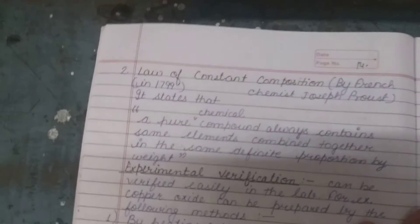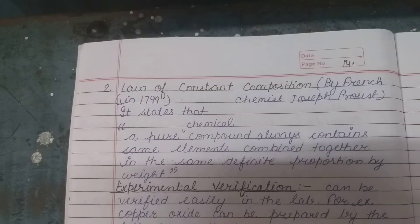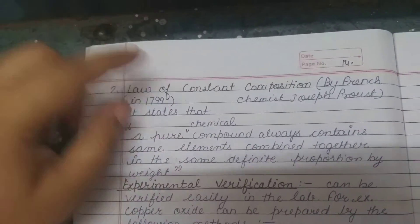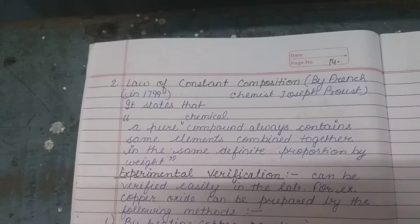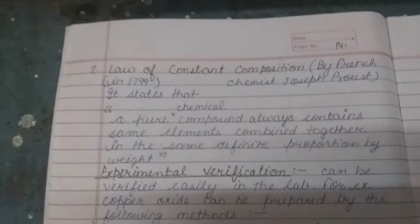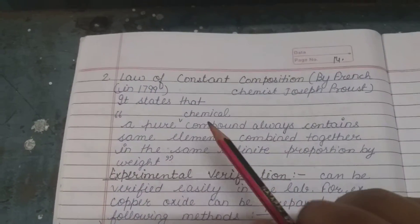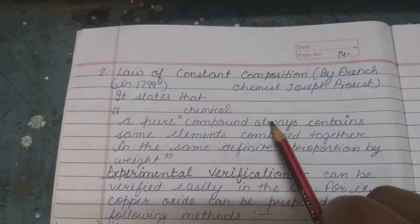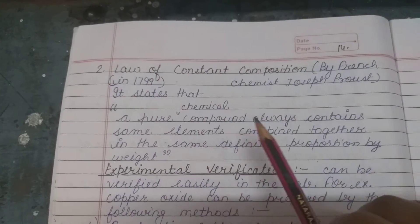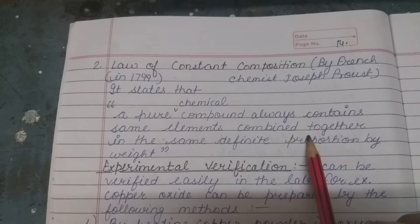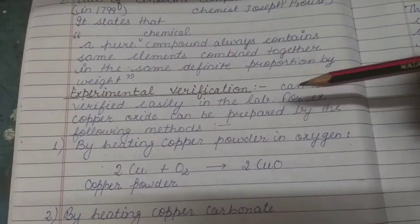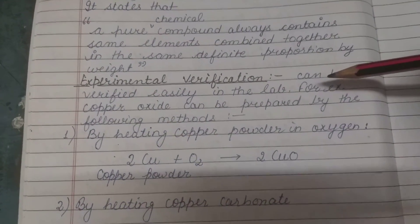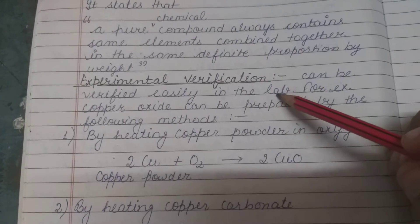Next law is law of constant composition. It was given by French chemist Joseph Proust in 1799. It states that a pure chemical compound always contains the same elements combined together in the same definite proportion by weight.